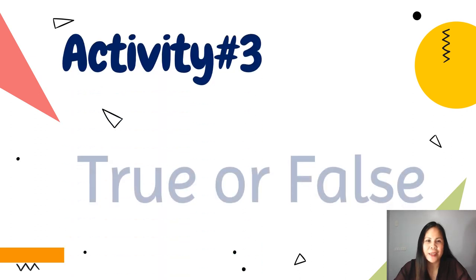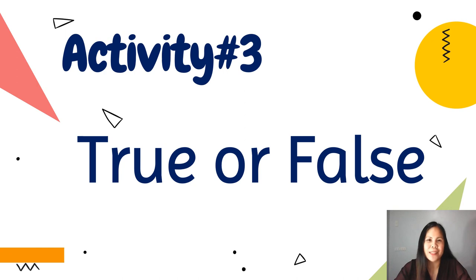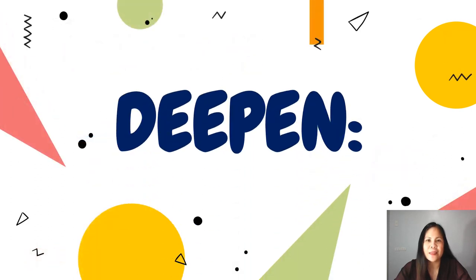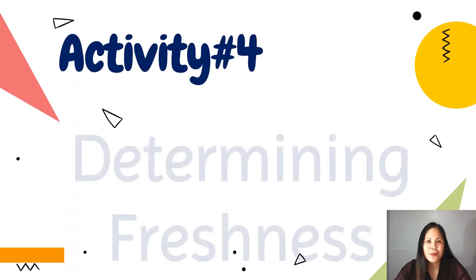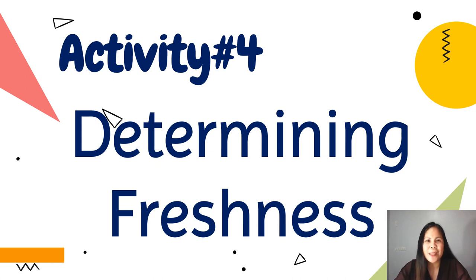For Activity 3, true or false — write 'true' if the statement is correct and 'false' if not. Write your answer on the space provided. For our deep-end activity, there are some activities that require output. For Activity 4, determining freshness — you're going to buy samples of fresh eggs and not-so-fresh chicken eggs, test them using the different methods of determining freshness, and write down your findings in short bond paper.